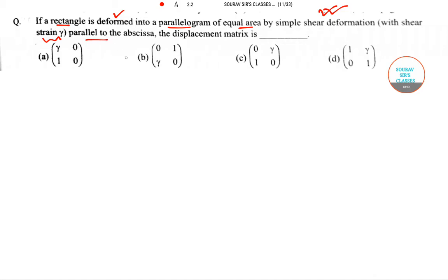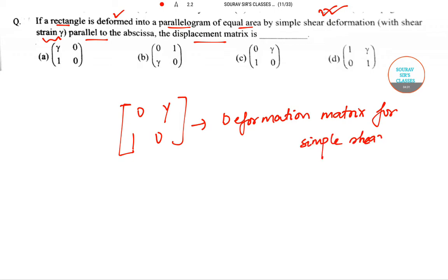So we have zero gamma one zero - this is our deformation matrix for simple shear, and zero zero gamma becomes the pure shear. That means the correct answer to this particular question will be option number C.